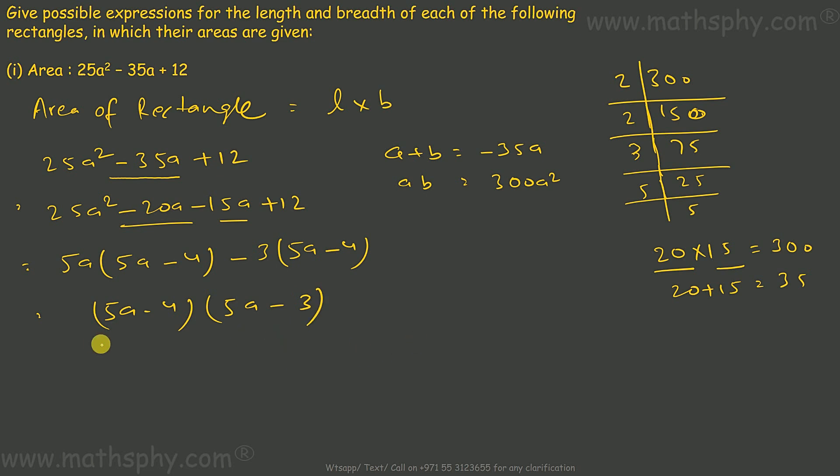So the factorization came to 5a minus 4, 5a minus 3. Now this can be length, this can be breadth, or this can be breadth, this can be length. So I write here, length can be 5a minus 4, breadth can be 5a minus 3.